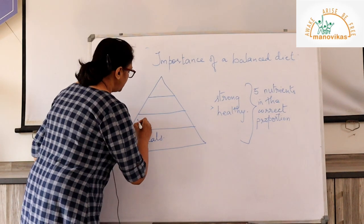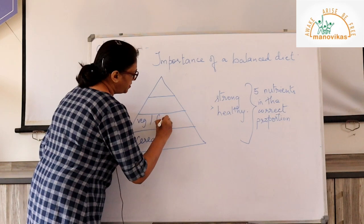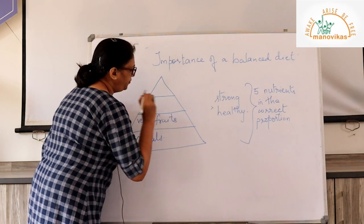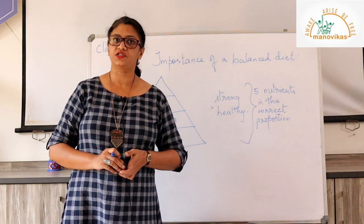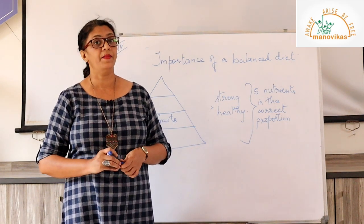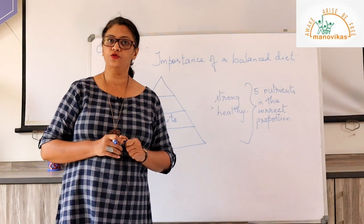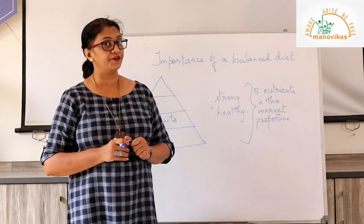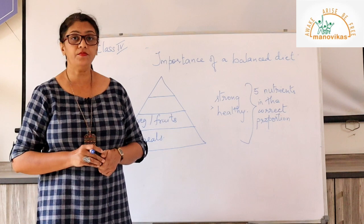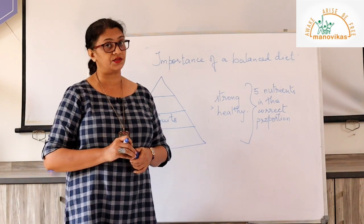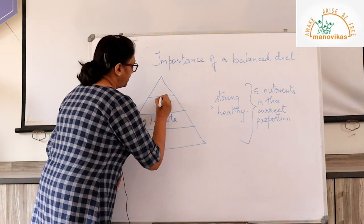Next we have vegetables and fruits. Vegetables and fruits need to be eaten in a good amount because they are protective foods — they protect us from different diseases.